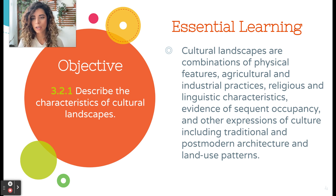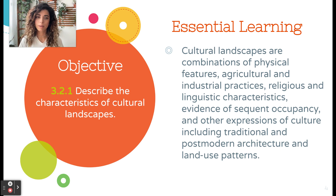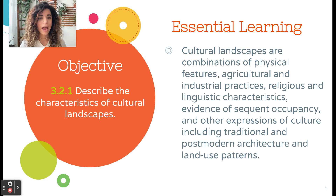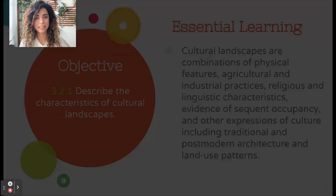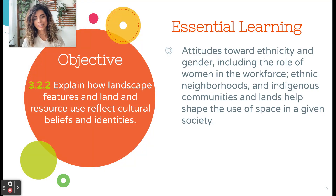There are two objectives for this part of the unit. The first one describes the characteristics of cultural landscapes — the combinations of physical features, agricultural and industrial practices, religious and linguistic characteristics, evidence of subsequent occupancy, and other expressions of culture that we can see reflected just by being present in that area.